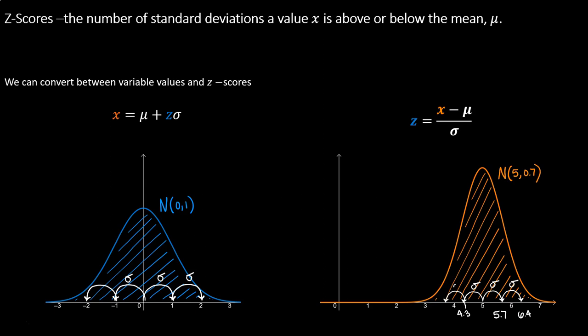If we were to travel two standard deviations below the mean for the standard normal curve, I would be at negative 2 — the negative telling me I traveled left, the 2 telling me how many standard deviations. For the orange curve, if I started at the center 5 and traveled left two standard deviations, I'm subtracting 0.7 twice: 5 minus 0.7 minus 0.7 puts me at 3.6. So the variable values 3.6, 4.3, 5.7, and 6.4 are all associated with z-scores that we can find on the standard normal curve.